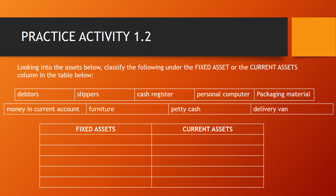Next up we have Practice Activity 1.2, which will really help you with determining fixed assets and current assets. The instruction is: looking at the assets below, classify the following under the fixed assets column or the current assets column. The options are: debtors, slippers, cash register, personal computer, packaging material, money in current account, furniture, petty cash, and delivery van.